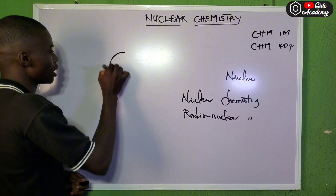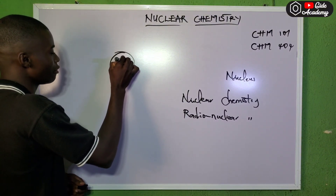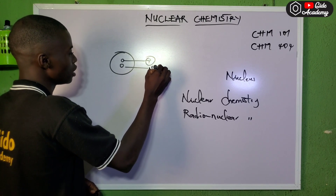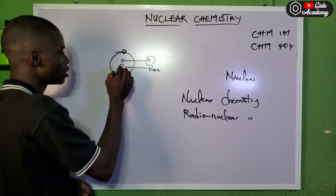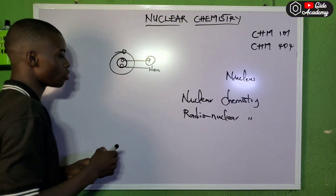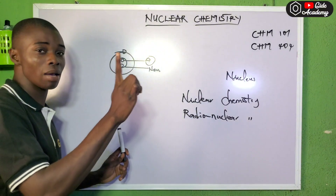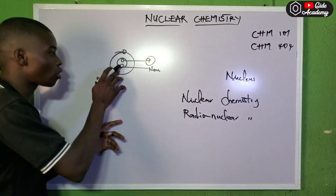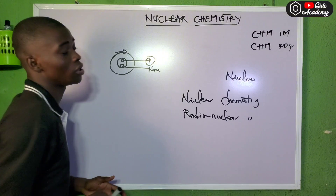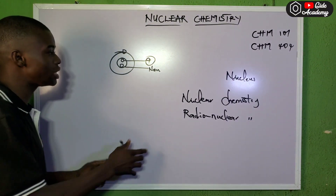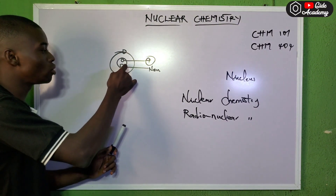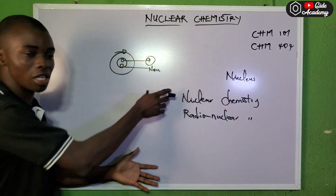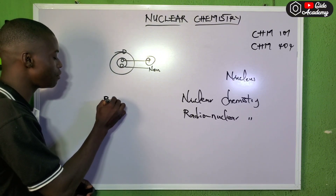In an atom, we have a proton with a positive charge, we have a neutron that is neutral, and we have an electron that revolves around it. The proton and the neutron are found in the nucleus. So the branch of chemistry that studies the changes that occur in the nucleus of an atom is called nuclear chemistry. Radioactivity is actually inside nuclear chemistry, but they are not the same thing.